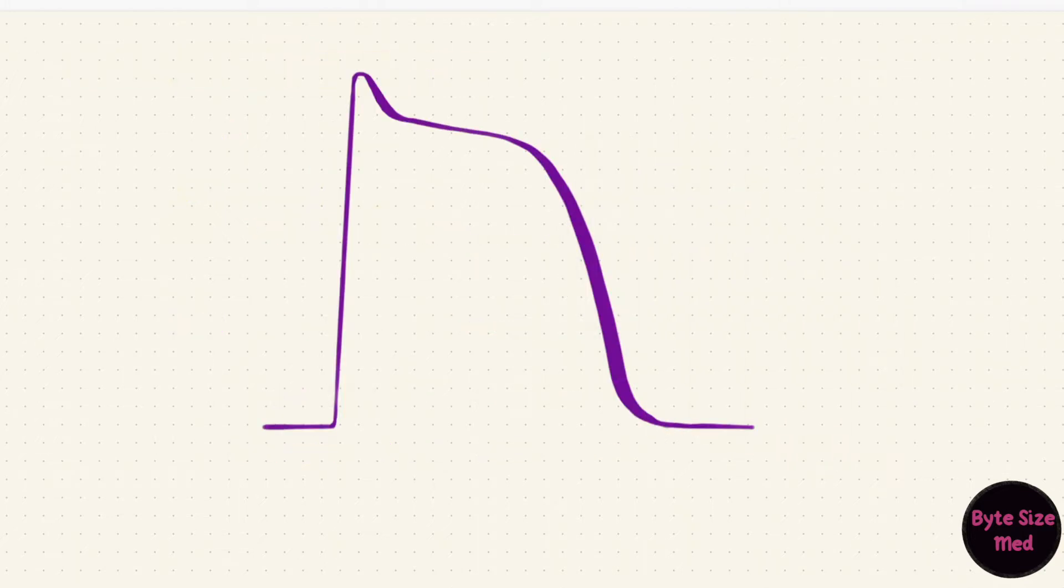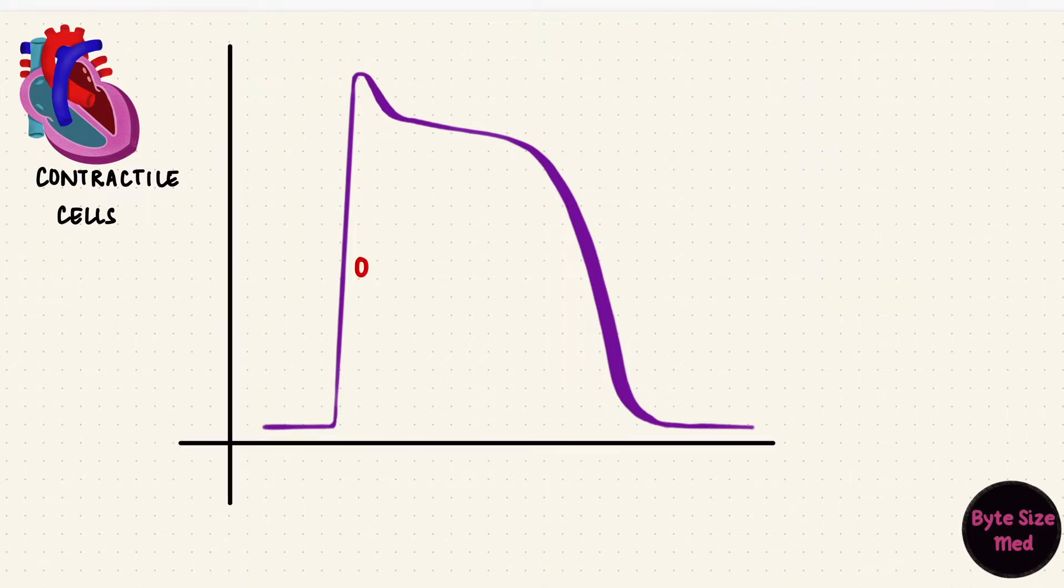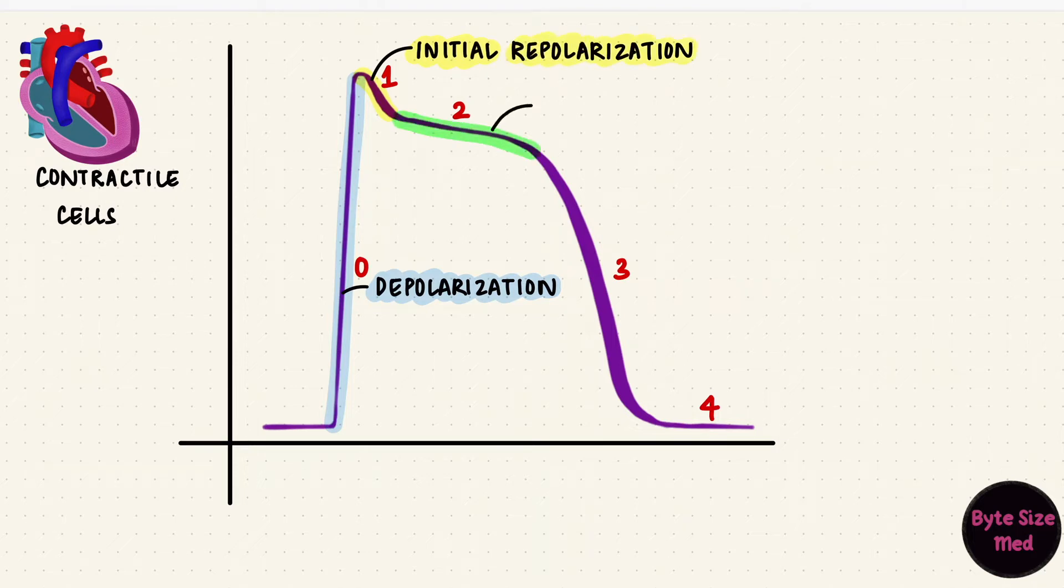In part one I talked about the ventricular action potential which had five phases, zero to four. Phase zero is the upstroke, that's depolarization. Phase one is initial repolarization. Phase two is the plateau. Phase three is the final repolarization and phase four is resting membrane potential.